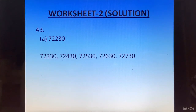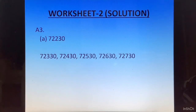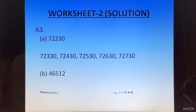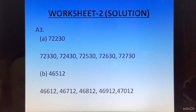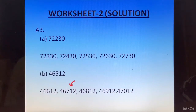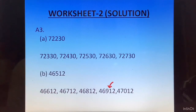This question is similar to the previous one, but here only the starting number is given and we have to find 5 numbers after it. For Part B starting from 46512, we add 100 each time to get 46612, 46712, 46812, 46912, and 47012.